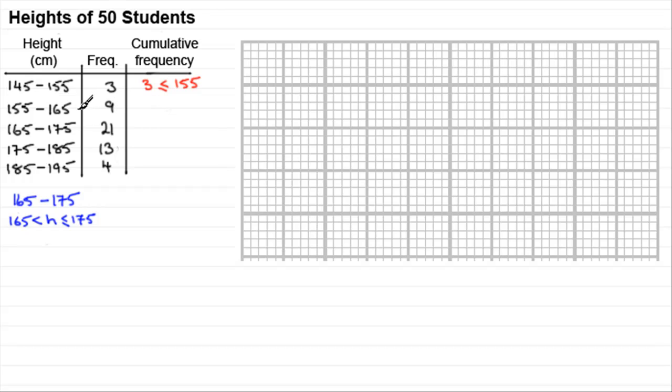Now when it comes on to how many people have a height less than or equal to this upper bound of 165, well it is the total, the cumulative total of the three and the nine. In other words, 12 people have a height less than or equal to 165 centimeters. Now we don't normally put these values in here, the less than or equal to. So in other words, when you come to how many people are less than or equal to 175, it will be a total of 21, the nine and the three, which comes to 33. So we'd normally just put 33 there. It's up to you though whether you want to put the less than or equal to 175 in.